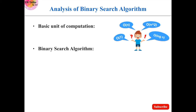Whenever you want to analyze an algorithm, first you should find out the basic unit of operation — that is, the basic operation involved in that particular algorithm to complete the given task. For example, in binary search algorithm the task is to find the search element in the given array. In order to complete the task, we are comparing the search element with the middle element, so the basic unit of operation is comparison.